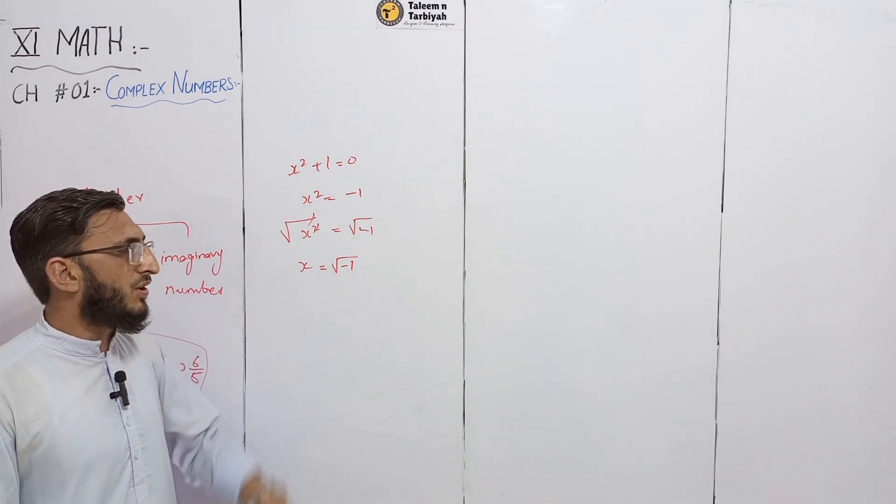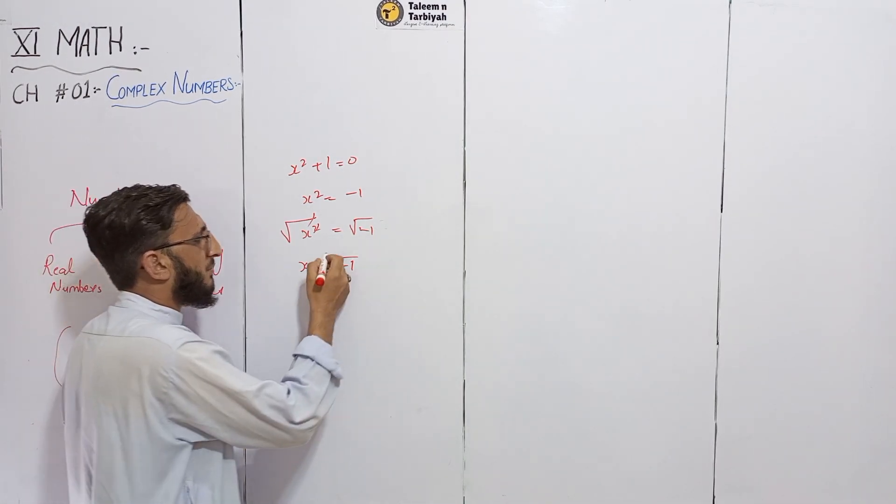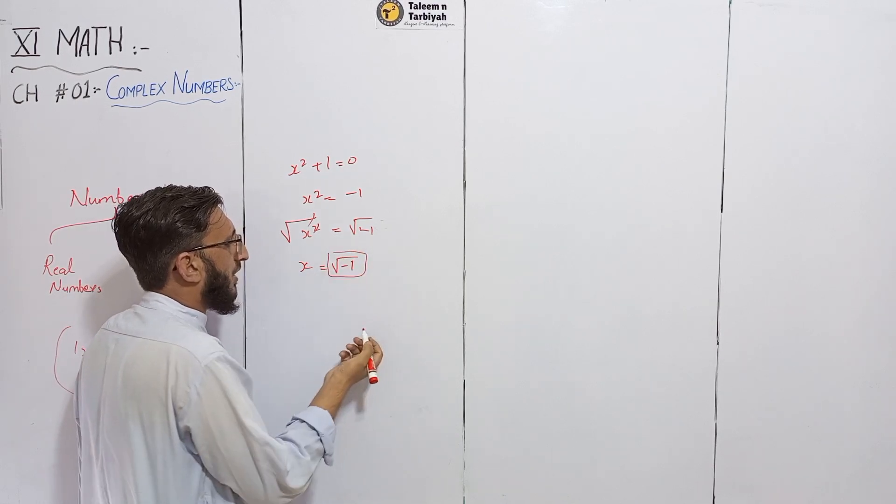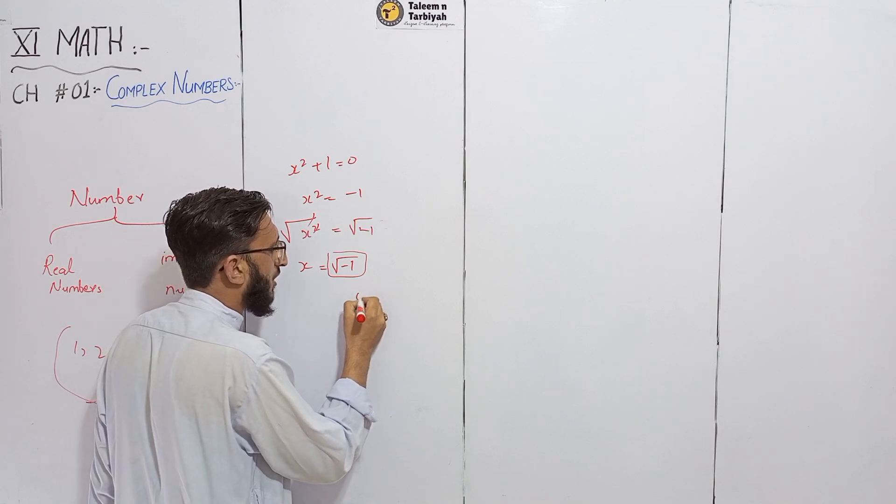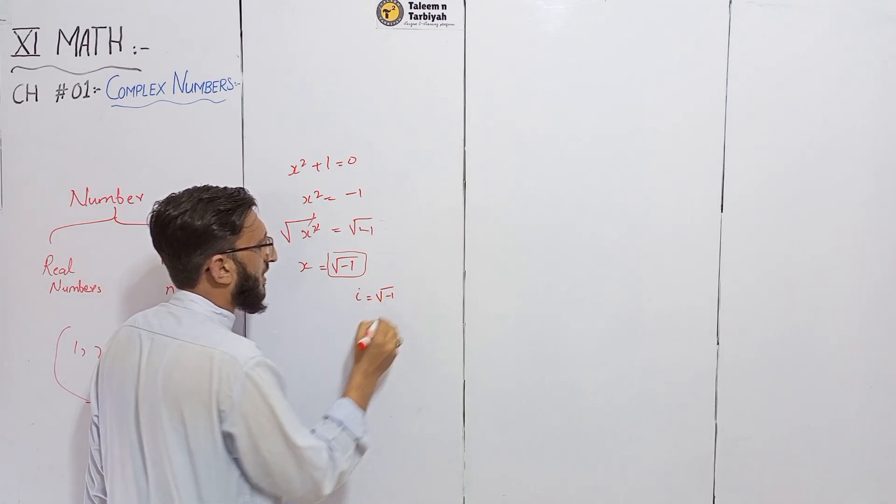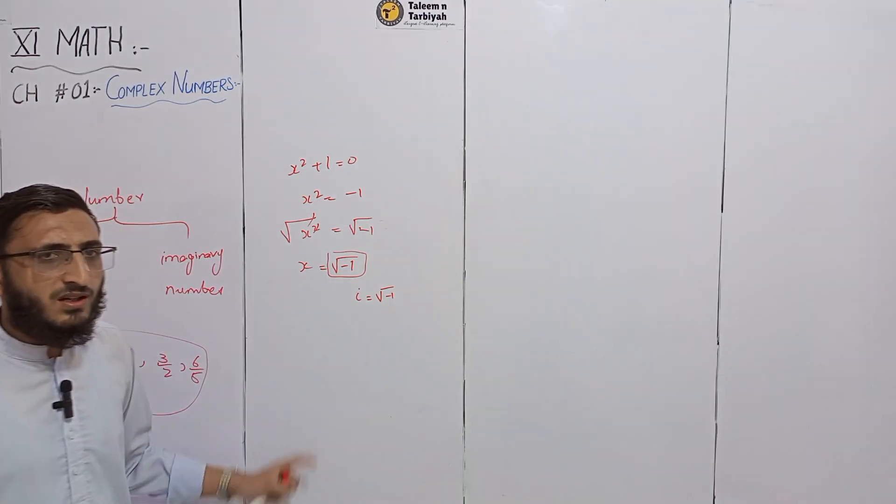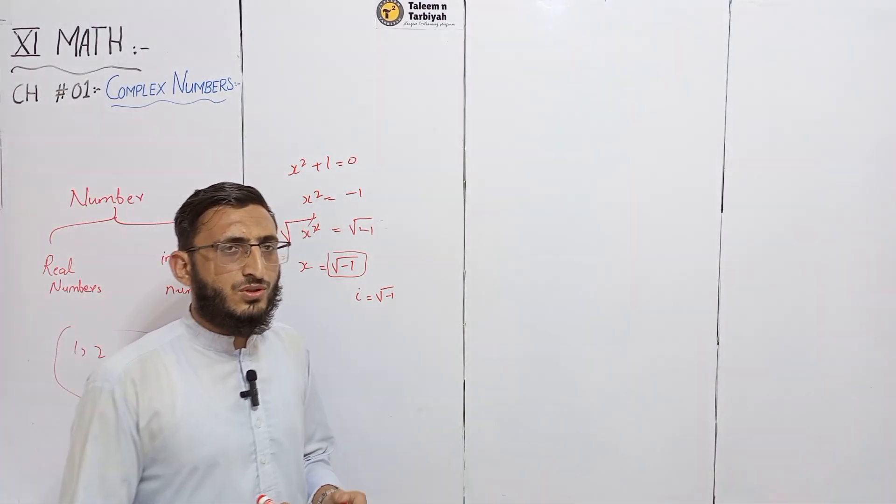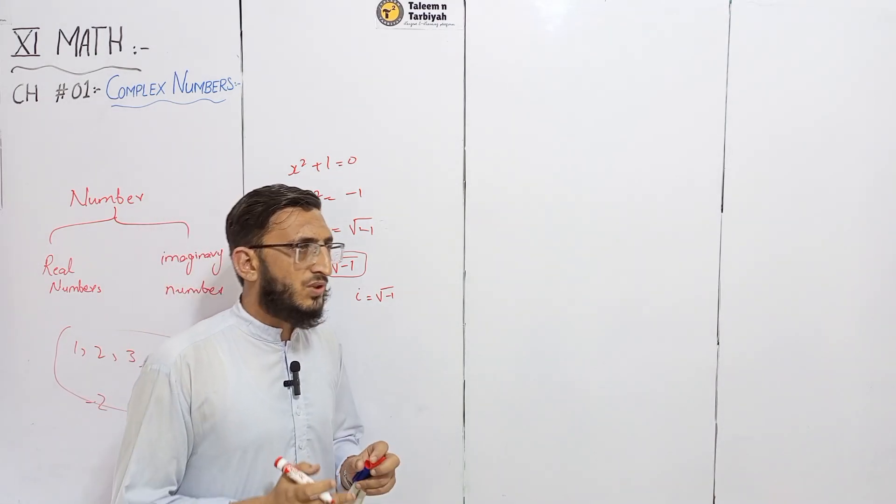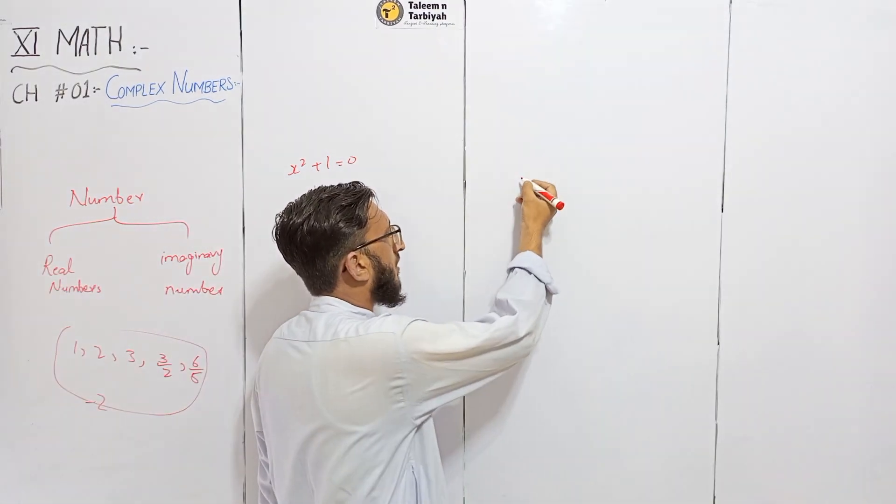So we have under root minus 1, this is equal to iota. It means that we have an imaginary number. Now, if we have solved it, then we have two types of numbers: imaginary part and real part.